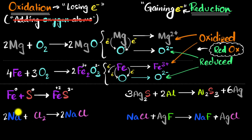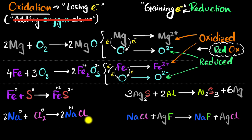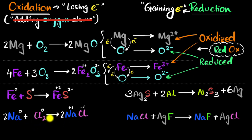Now sodium reacting with chlorine. Sodium has charge zero, chlorine also has charge zero. Sodium is a metal so it loses one electron, giving a +1 charge, and chlorine gains an electron giving it −1 charge. So it's sodium that lost electrons — sodium got oxidized. Chlorine gained electrons, so chlorine got reduced.